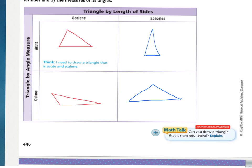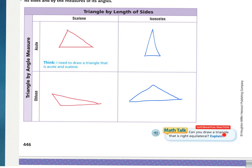Looking at this math talk: can you draw a triangle that is right equilateral? Draw a 90-degree angle and see if you can make all three sides the same length. In all honesty, if you've been trying for a little bit, it's not going to happen. An equilateral triangle is always going to have acute angles — that's the only way to make it so that all three sides are the same length. So the answer is no.